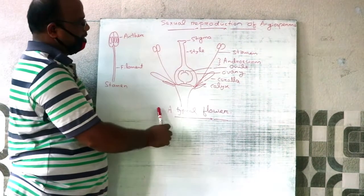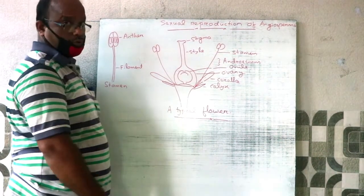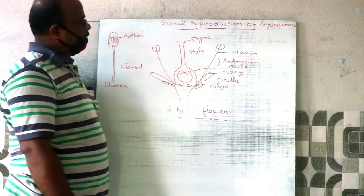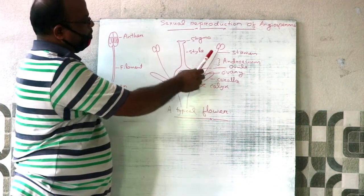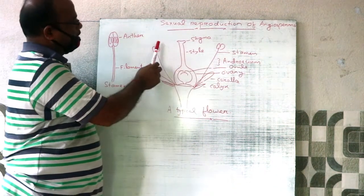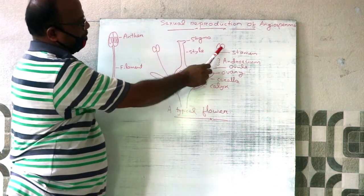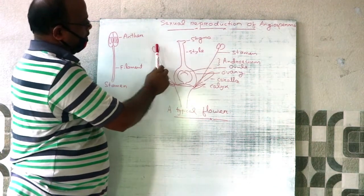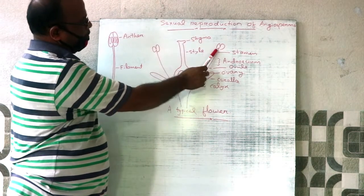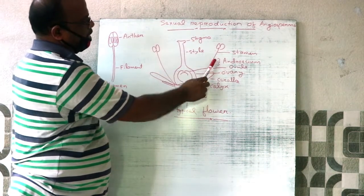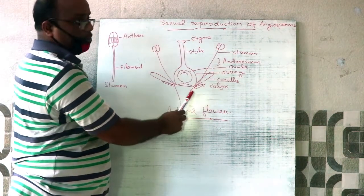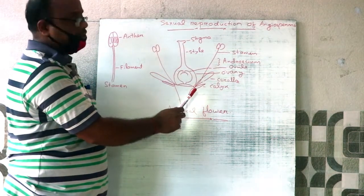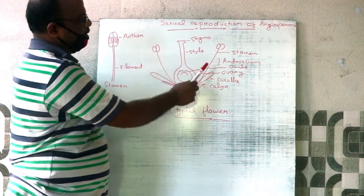A flower is a modified shoot. The male reproductive whorl of a flower is known as the Androeceum. The individual unit of the Androeceum is called a Stamen.